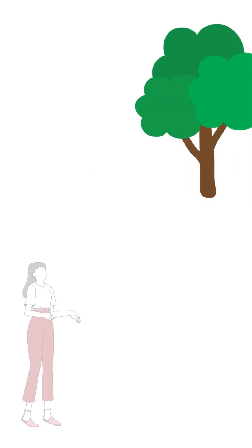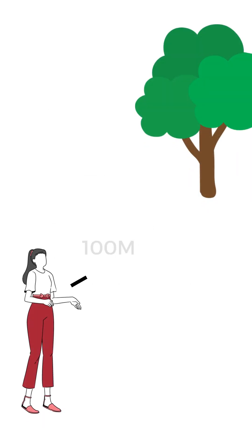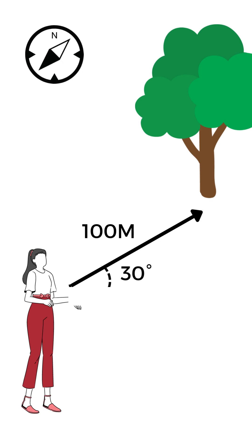To understand vector resolution, imagine you're standing and want to walk to a tree 100 meters away at a bearing of 30 degrees from north. To determine the distance, you need to walk in the north and east directions.